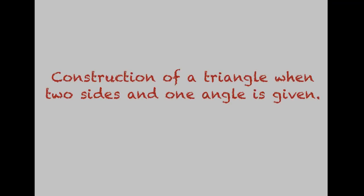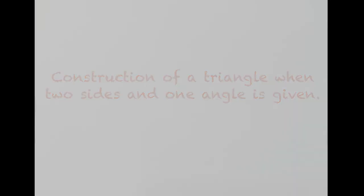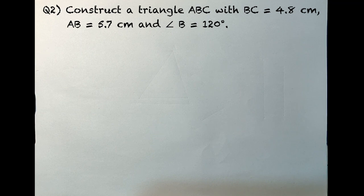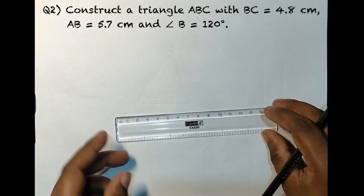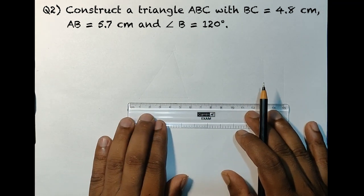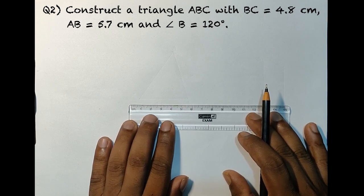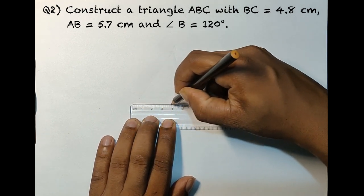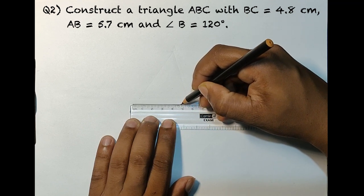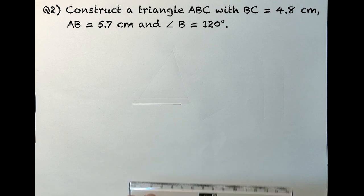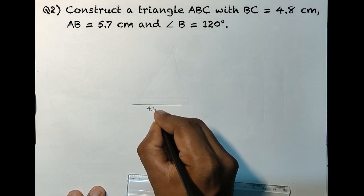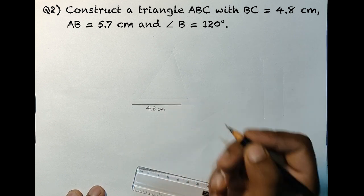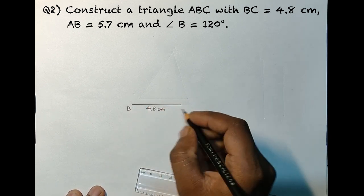Next, we will learn about construction of triangles when two sides and one angle is given. Construct a triangle ABC with BC 4.8 centimeters, AB 5.7 centimeters, and angle B equal to 120 degrees. To draw the triangle we need a base, so let's take BC which is 4.8 centimeters as the base. Let's write 4.8 centimeters and label it BC.